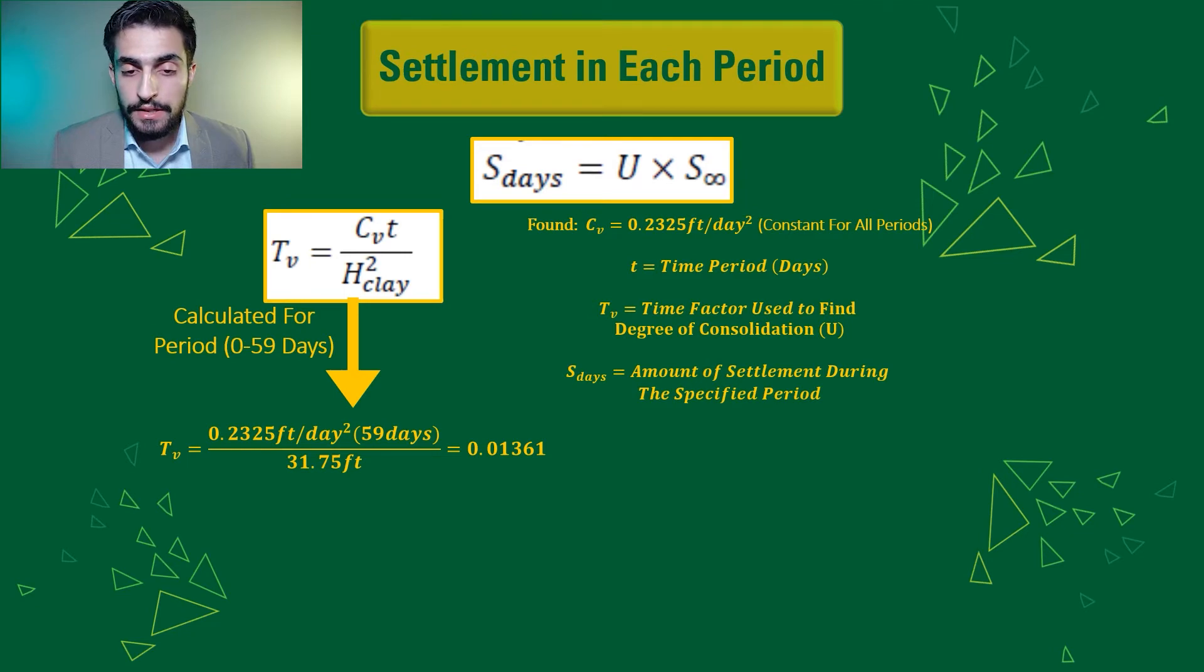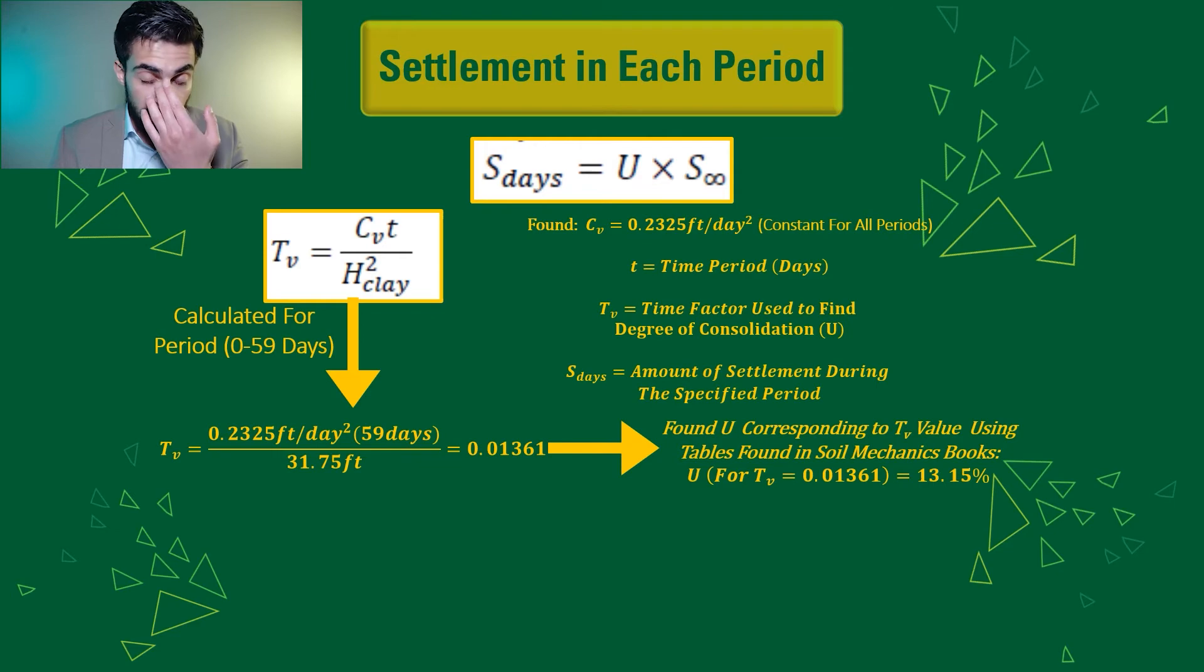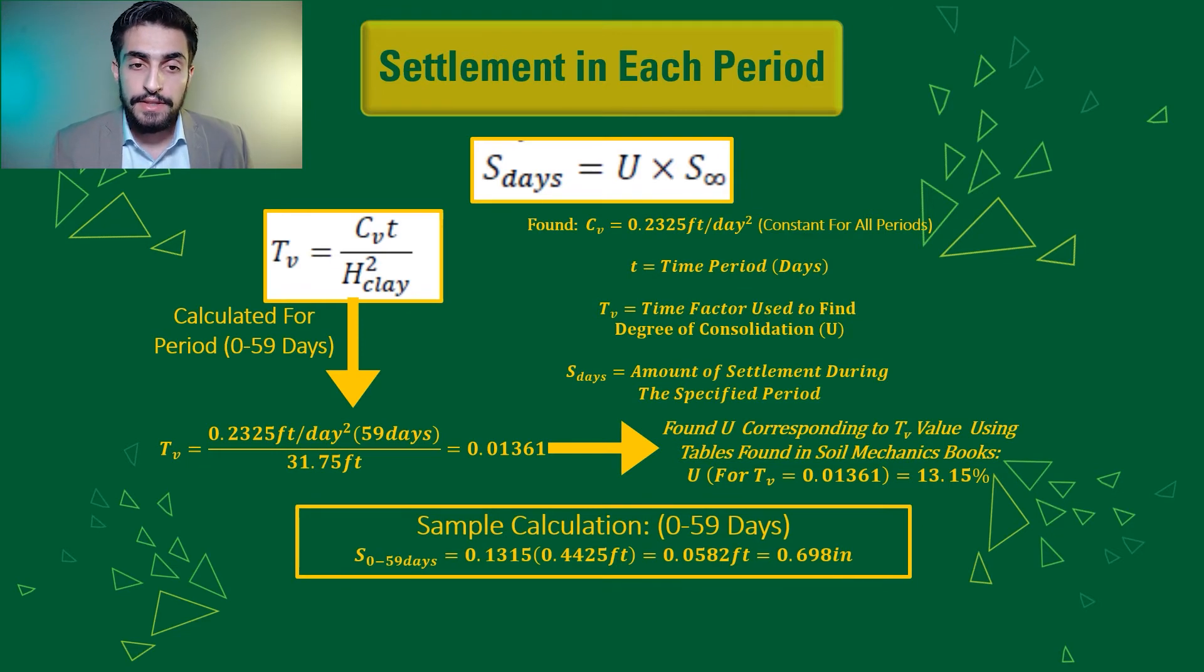And then corresponding to that Tv value, U was 13.15 percent. Plugging in all the information that we got so far to give us a settlement during the first period of 0.698 inches.